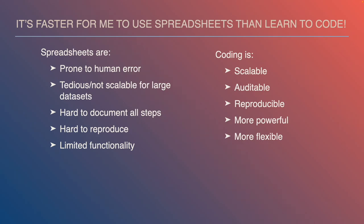One thing I've heard from students is that they know how to use spreadsheets like Excel or Google Sheets, and it's easier to apply what they already know than to learn to code, because coding is tedious, you make errors, and it's frustrating. There are a lot of issues with that. Working through spreadsheets is highly prone to human error because it's dependent on you manually entering data, selecting cells, clicking around, and doing particular steps — which can be tedious and not scalable for large datasets.